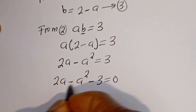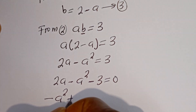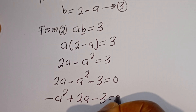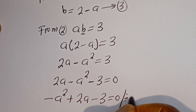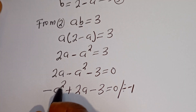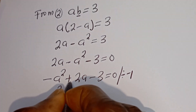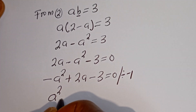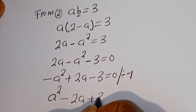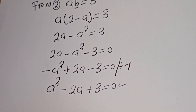Now let's put this in standard form: minus A squared plus 2A minus 3 is equal to 0. Dividing all terms by minus 1, we get A squared minus 2A plus 3 is equal to 0. This is a quadratic equation.